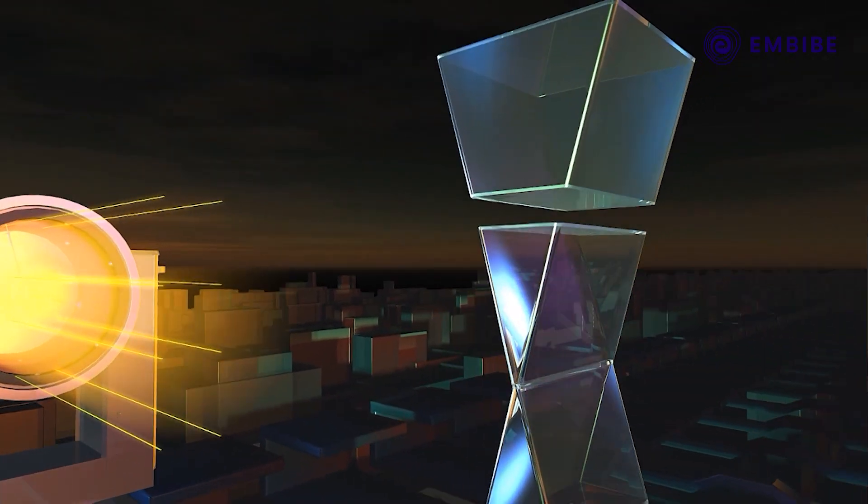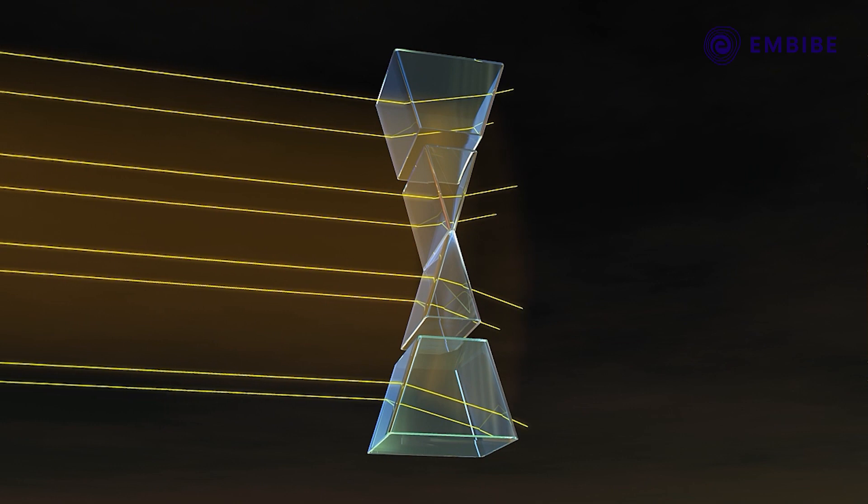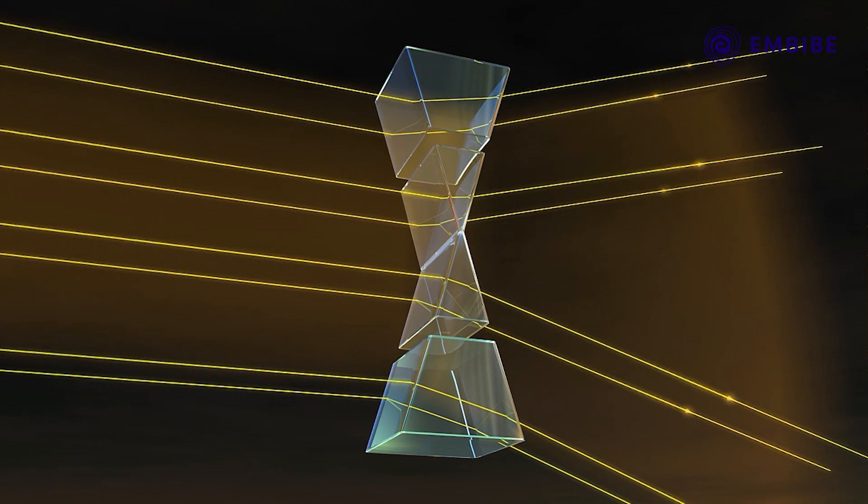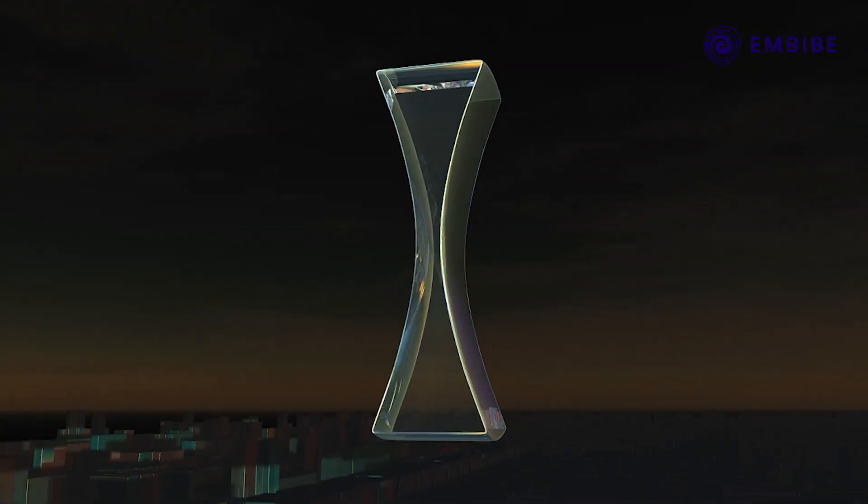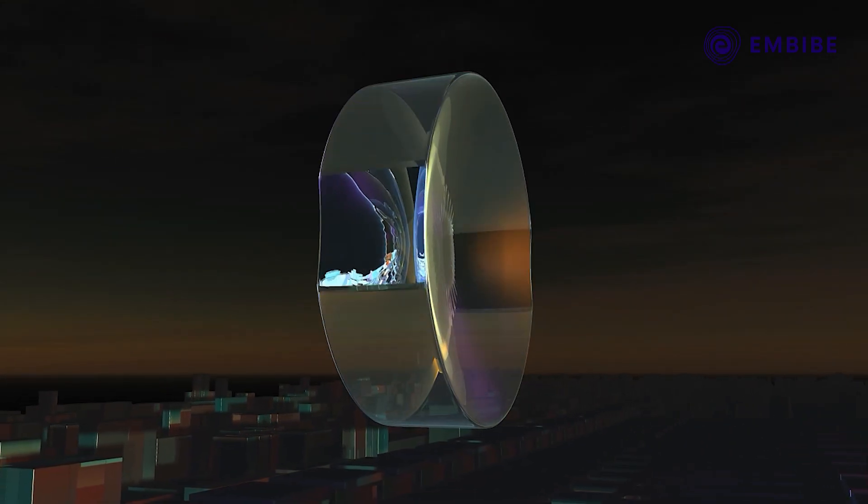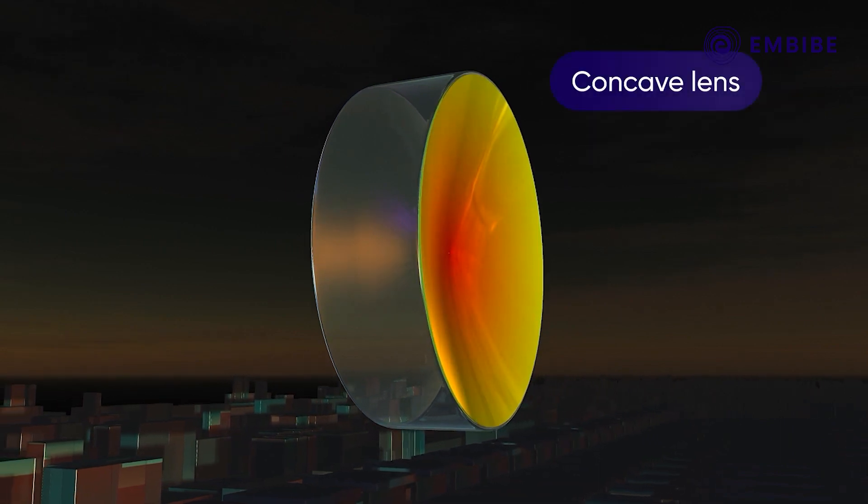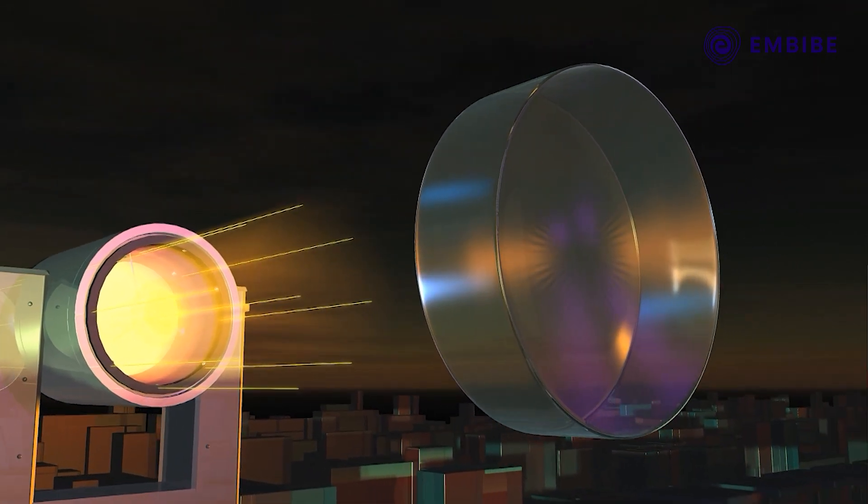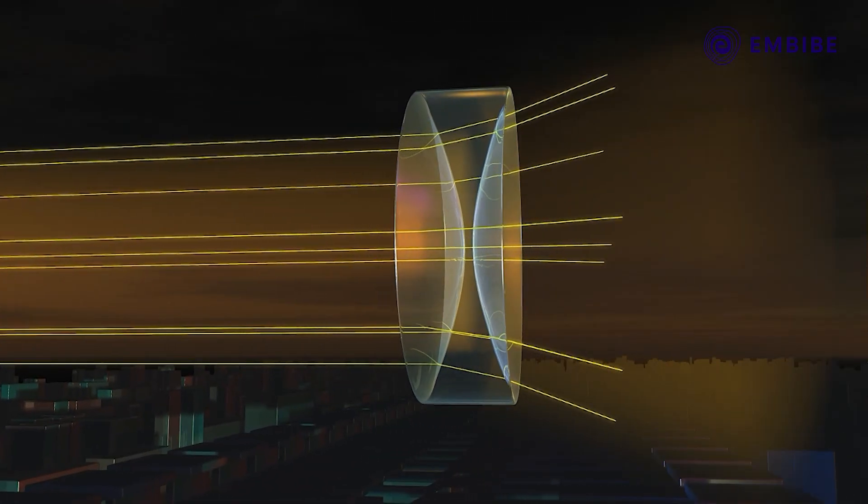The parallel rays of light falling on such an arrangement refract away from the center. Overall, we can see that the light undergoes divergence and it emerges on the other side. A single piece of glass formed in this fashion having inward curvature is called the concave lens. The parallel rays of light incident on the concave lens undergo divergence as they emerge on the other side.